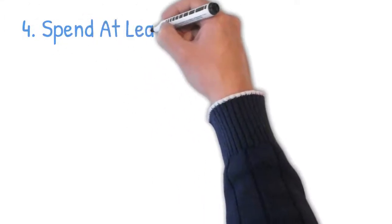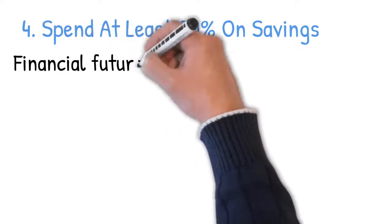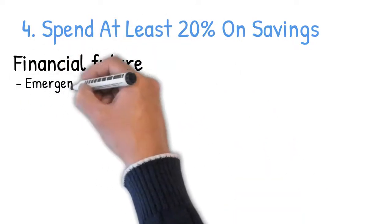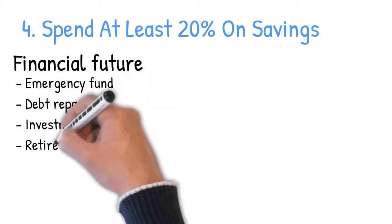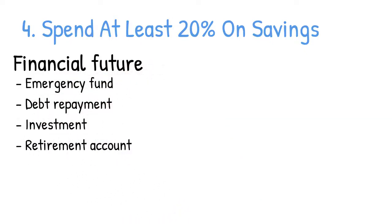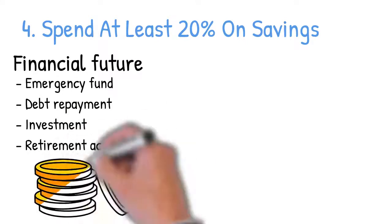Step 4: Spend at least 20% on savings. Now, let's talk about the last step, which is the most important for your financial future. As I mentioned, the savings bucket list includes the emergency fund, debt repayment, investment, and retirement account. That's a lot of obligation to cover with only 20% of your after-tax income, if you ask me.